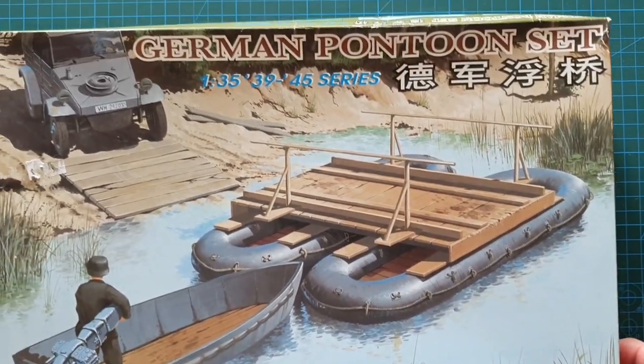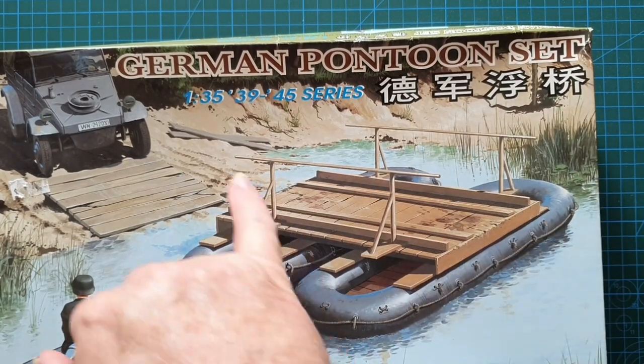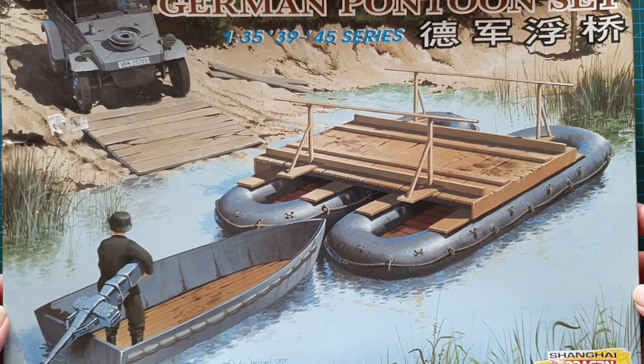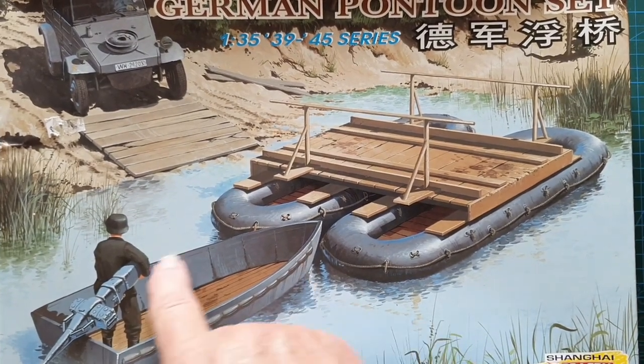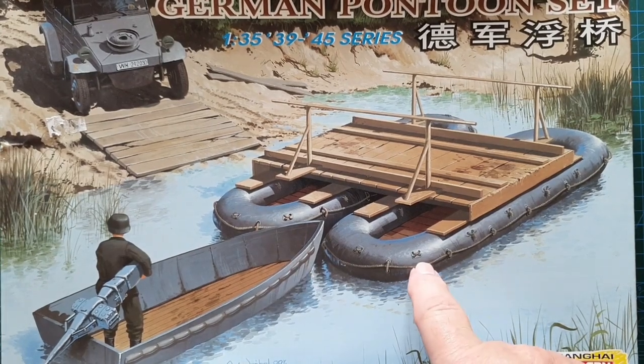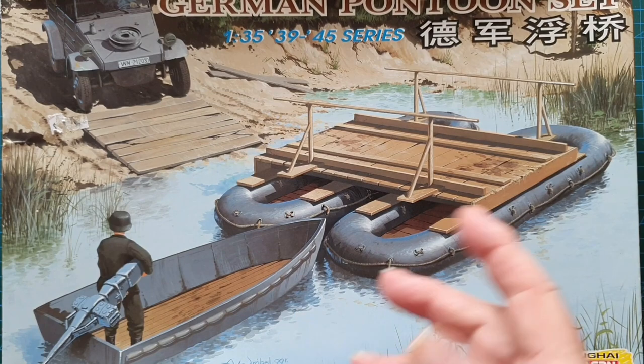It is in 1/35th scale and it is their German pontoon set. It's part of their 39 to 45 series and it is literally a stern boat with one crew member, two large rubber rafts and this section here which is your pontoon bridging set.